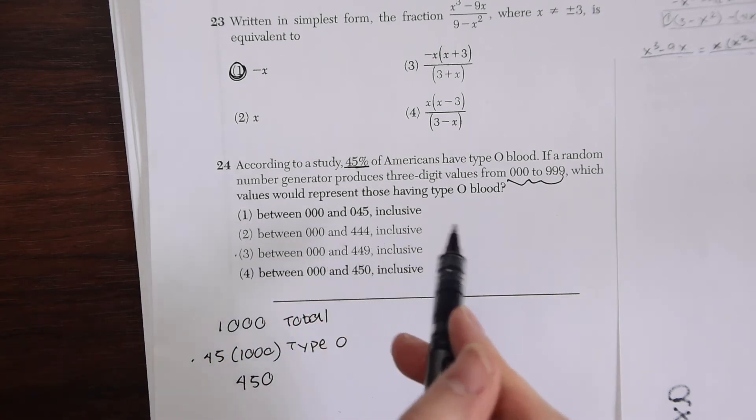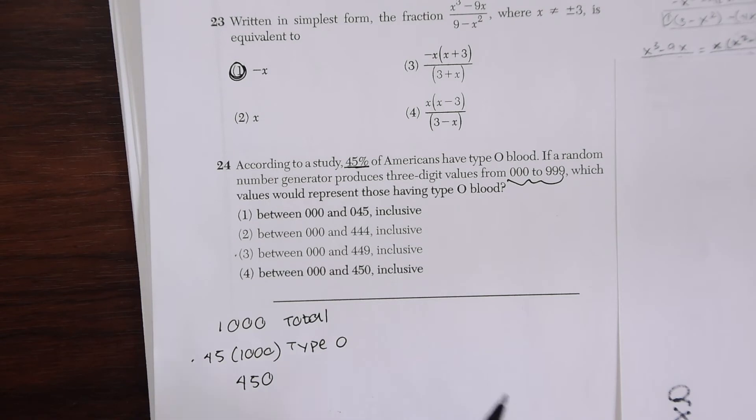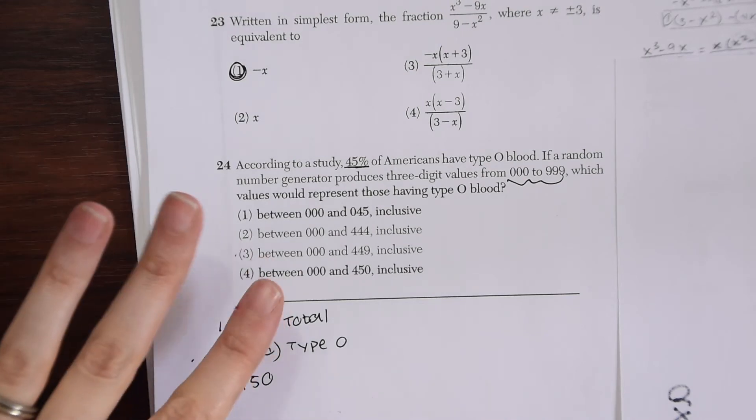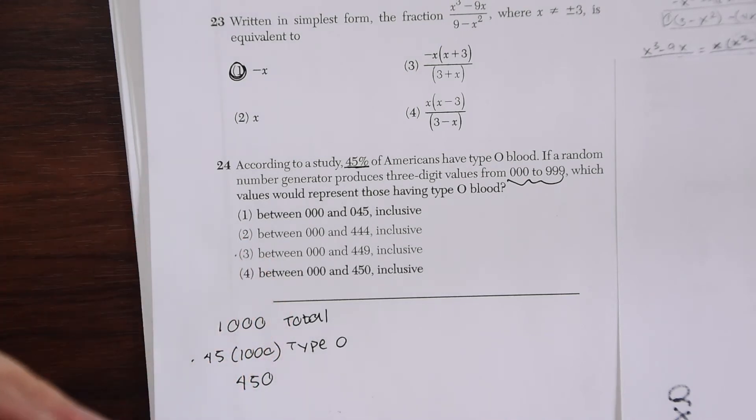Which values would represent those having type O blood? We know that we would need 450 but there's all these choices and they all look very similar. So we have to think about this. Really when you have to count zero as one here.